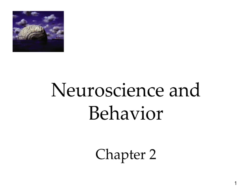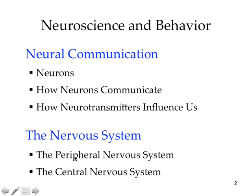To understand why we think and act the way we do, we need to figure out how neurons work and communicate. That's going to be today's PowerPoint and screencast. On this slide you see neural communication, with the learning objective of looking at how neurotransmitters work and communicate. We'll get to the nervous system and the endocrine system later.